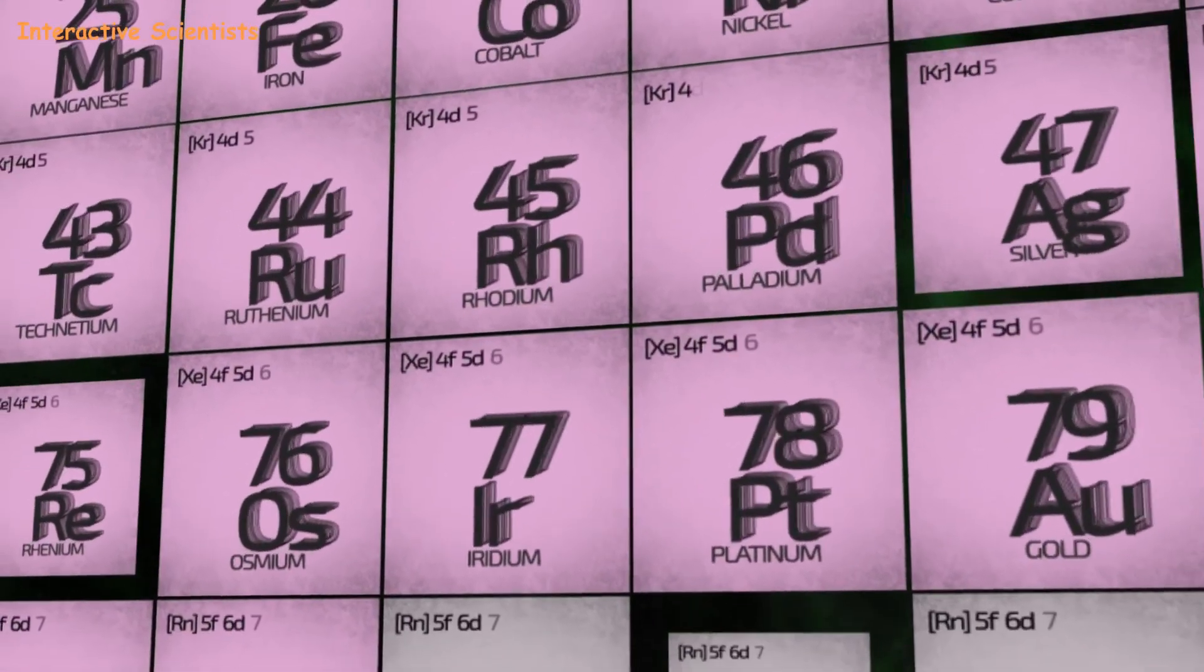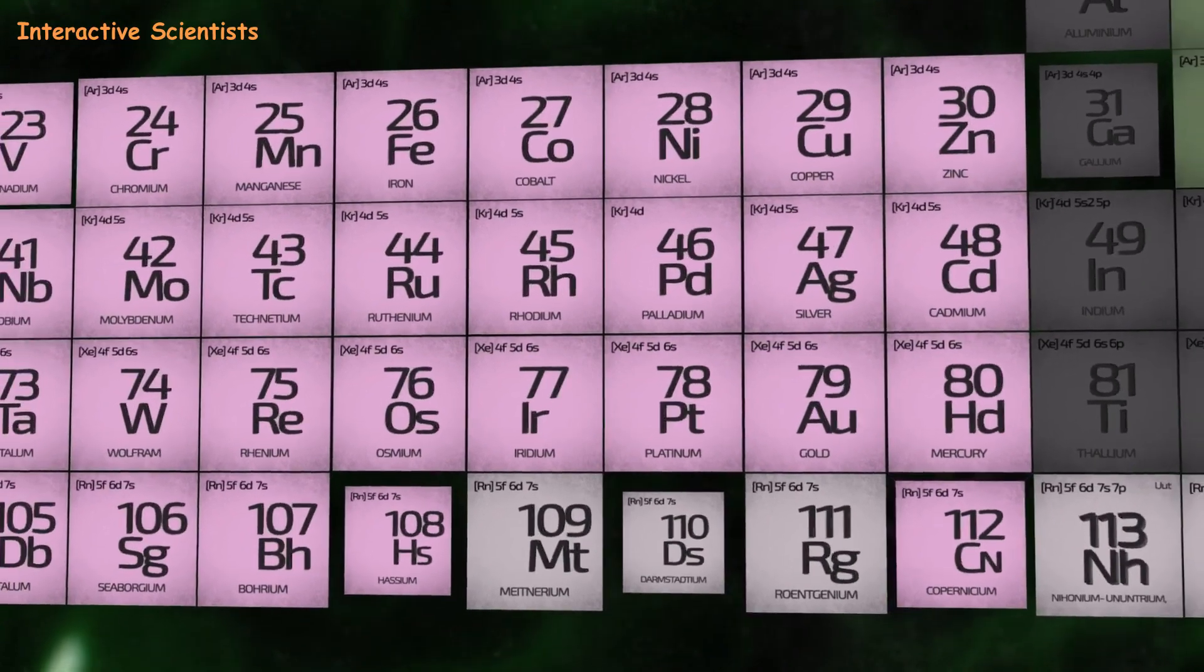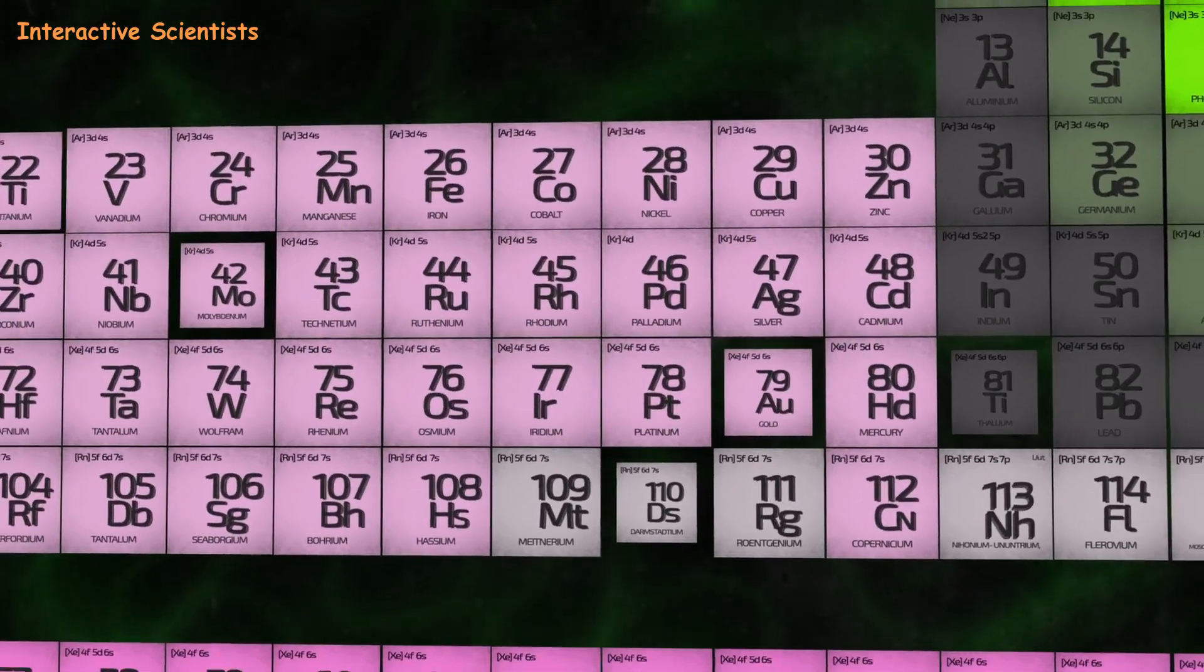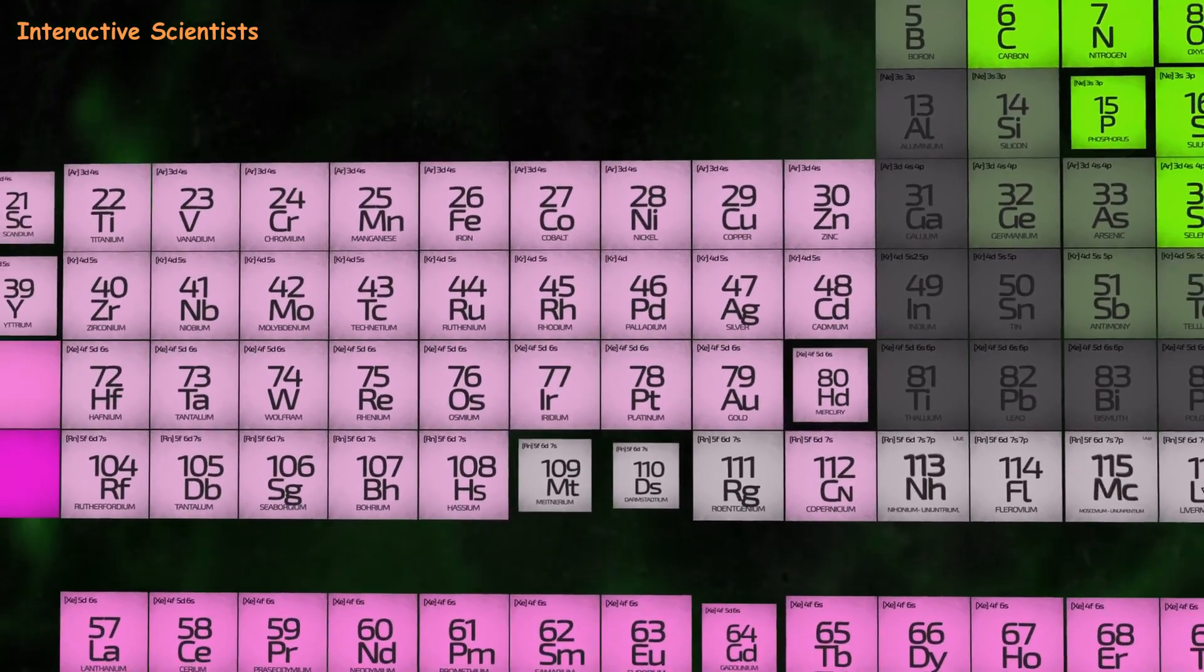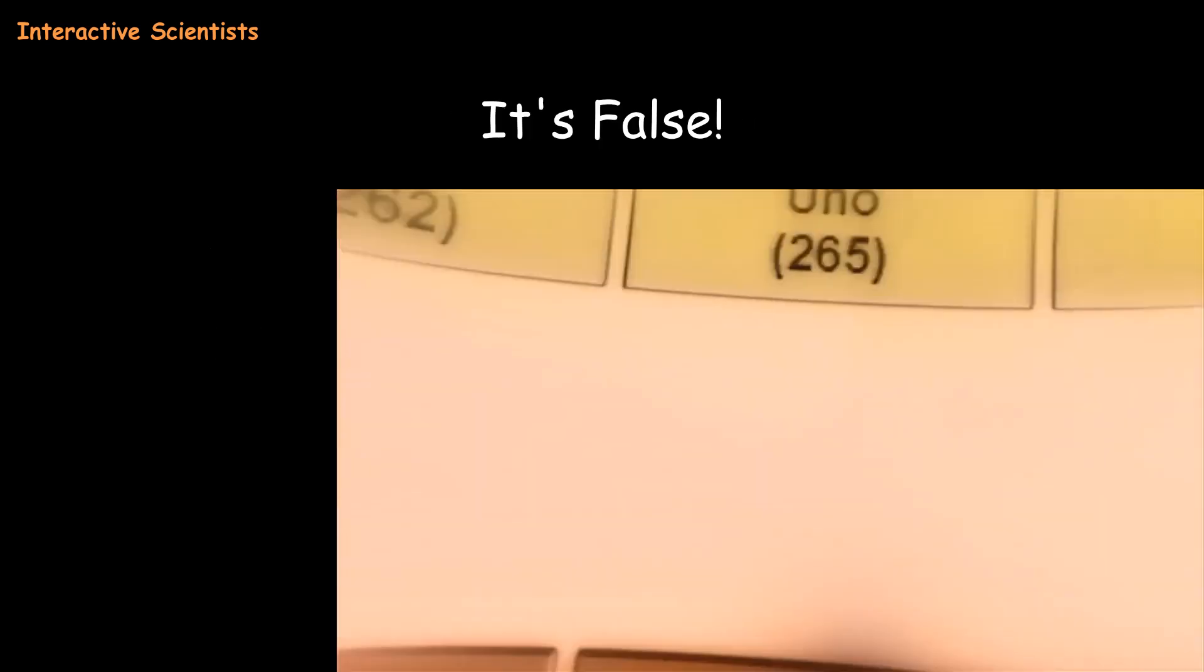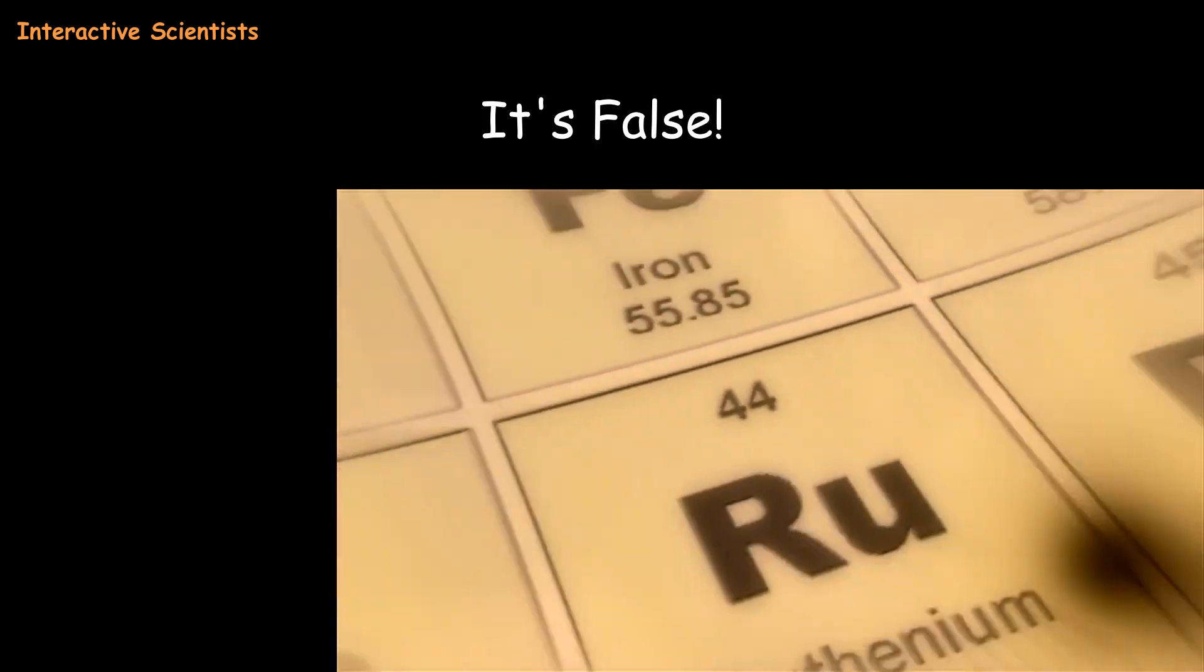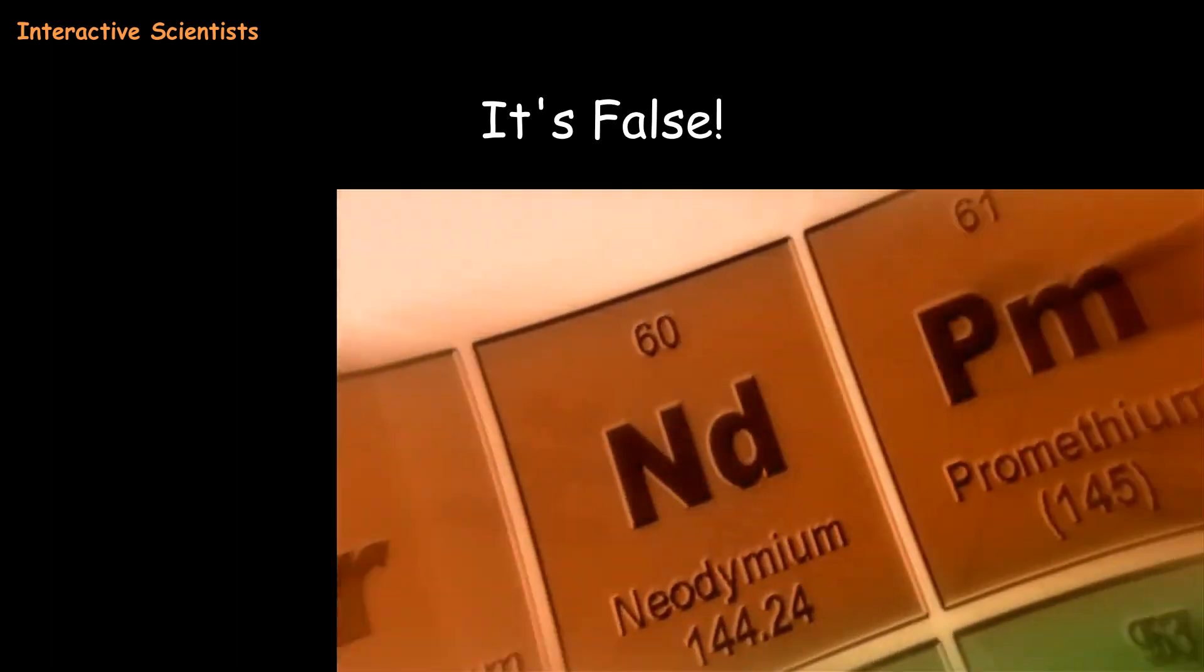In conclusion, the periodic table is like a treasure map to understanding the universe. It helps scientists discover new elements and create amazing things. True or false: the periodic table is essential for scientists but it doesn't affect our daily lives. What do you think? Actually it's false. The periodic table is super important for both scientists and all of us in our everyday lives.